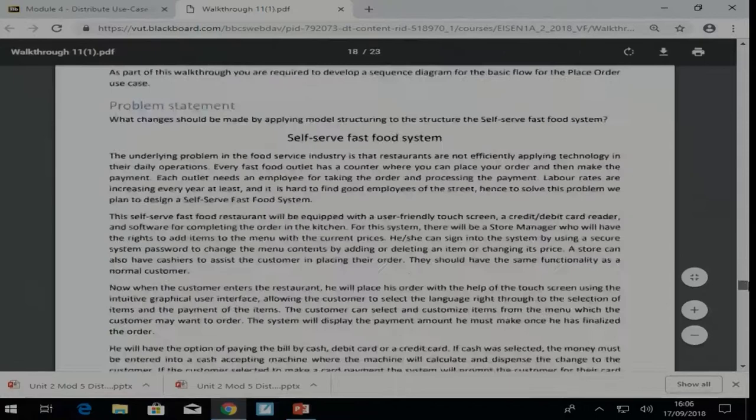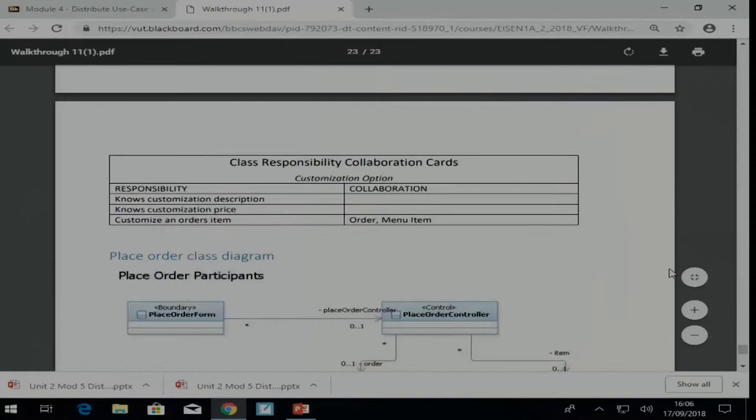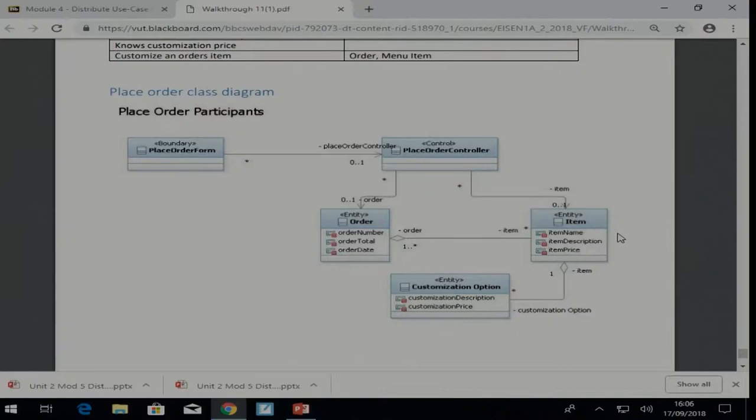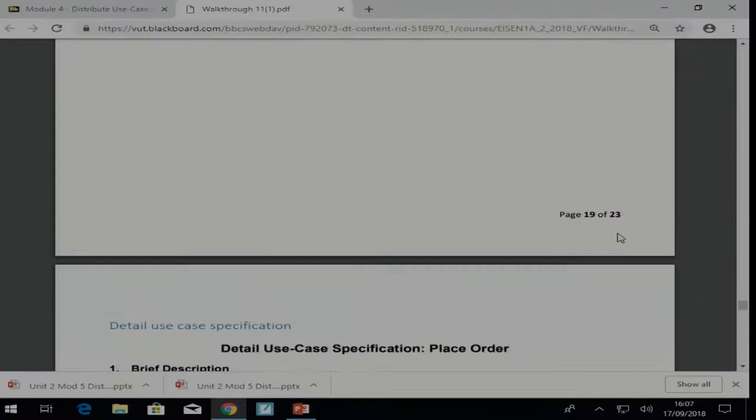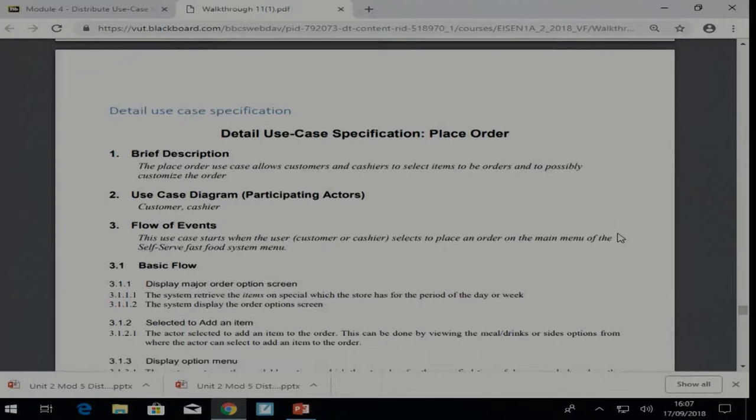So as part of this they are giving us a bit of a class diagram saying we have a place order form, controller, item, order, and a customization option. This is based on a use case which comes from a food system where we'd like to now place an order. Okay, so if we're to develop a sequence diagram for this, what are we seeing? What lifelines are we going to have? What will be our first lifeline?